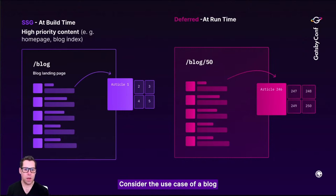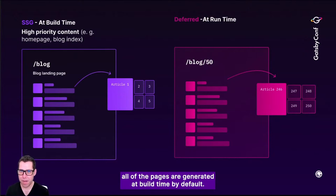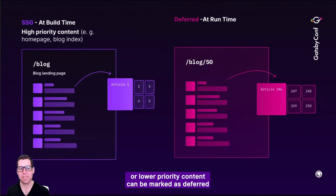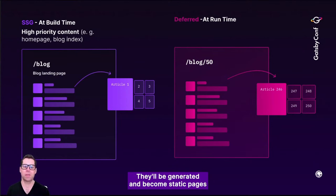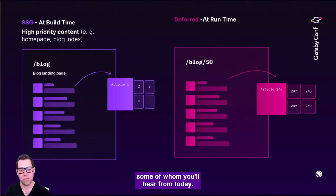Consider the use case of a blog with years' worth of posts. By default, all of the pages are generated at build time — this is what gets you that static site generator speed. However, older or lower-priority content can be marked as deferred, so that you don't spend build time generating those pages. They'll be generated and become static pages upon first user request. We've seen hundreds of sites leverage DSG to accelerate the publishing of priority content, some of whom you'll hear from today.